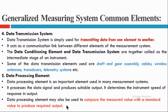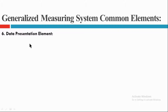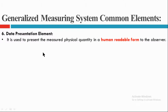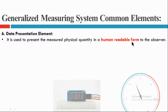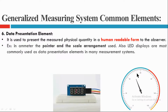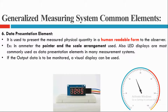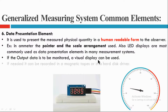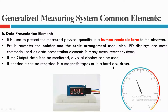The final stage of the instrument is the data presentation element. It presents the measured physical quantity in a human readable form. In an ammeter, we have a pointer and scale arrangement. LED displays are also mostly used in some data presentation elements. If we want to monitor the output data we can use a visual display. If needed, it can be recorded on a magnetic tape or a hard disk drive.